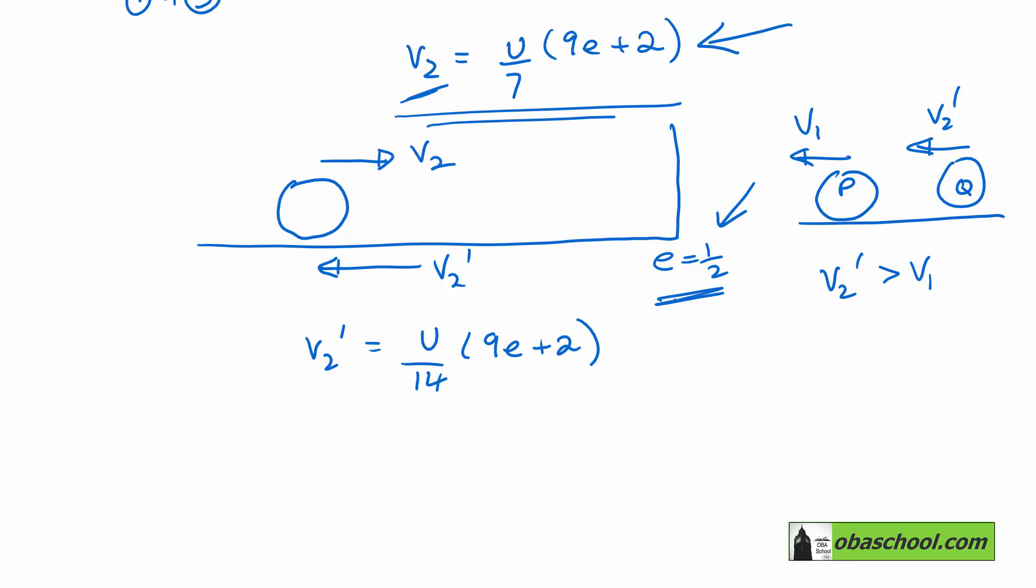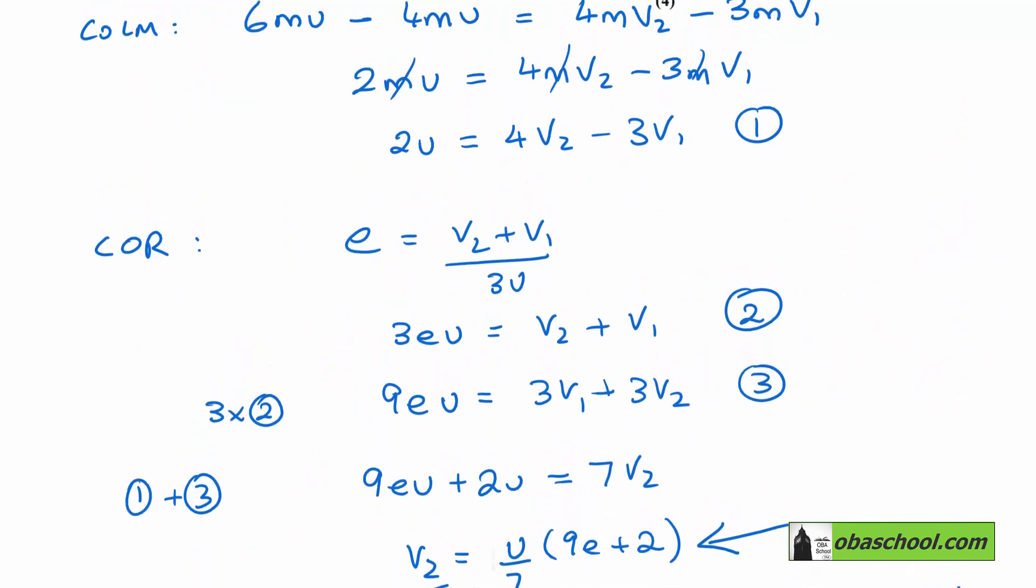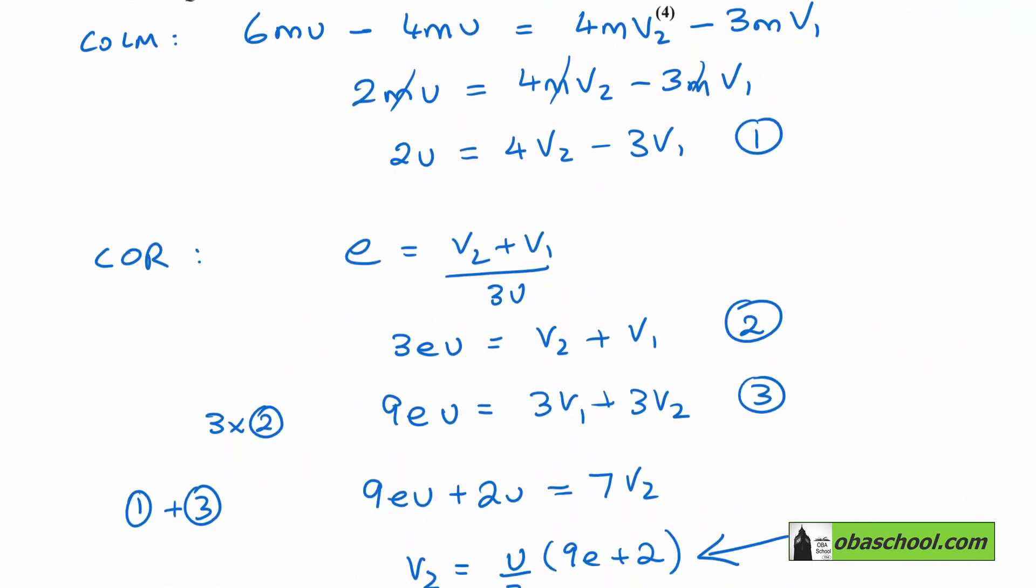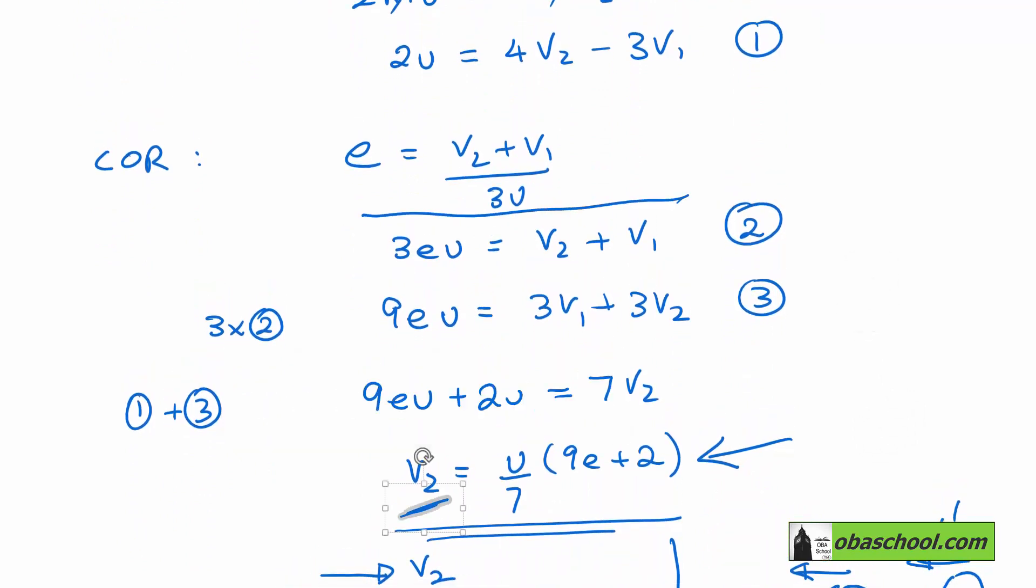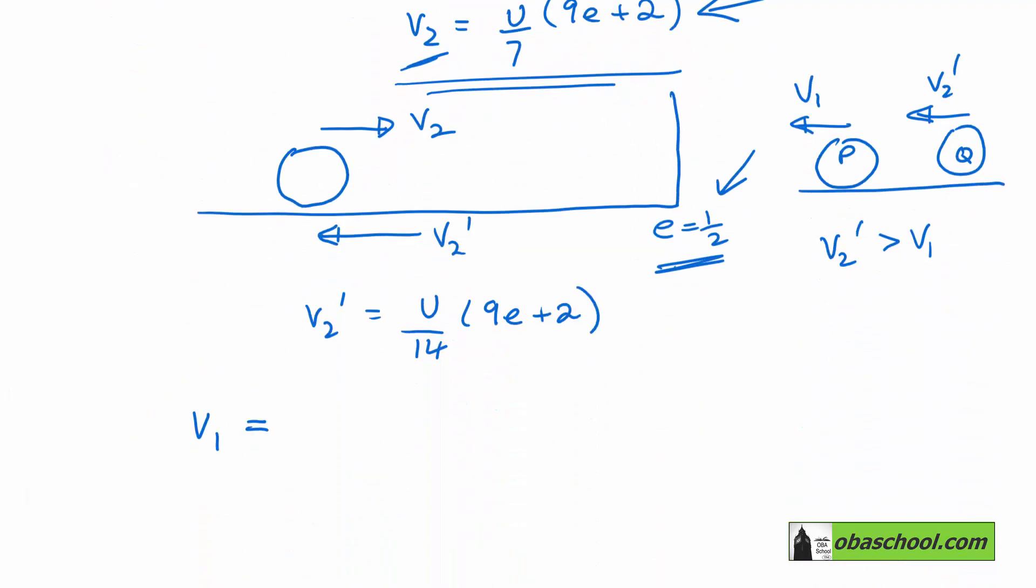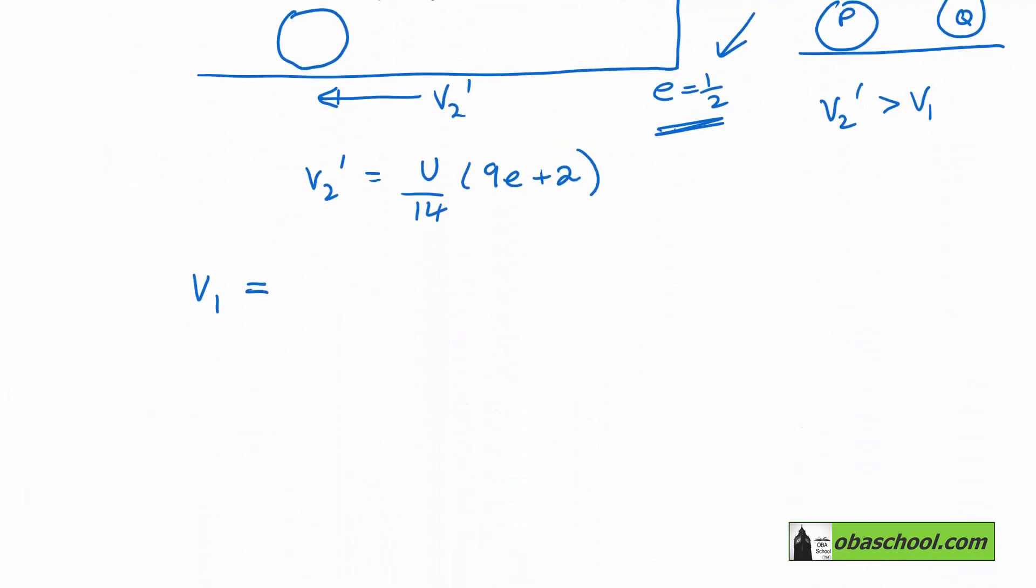Now, we can get that because we have these equations up here. And the useful one for us in this situation would be this one. If we just rearrange that, we have that V1 is 3EU take away V2, which was U over 7, 9E plus 2.